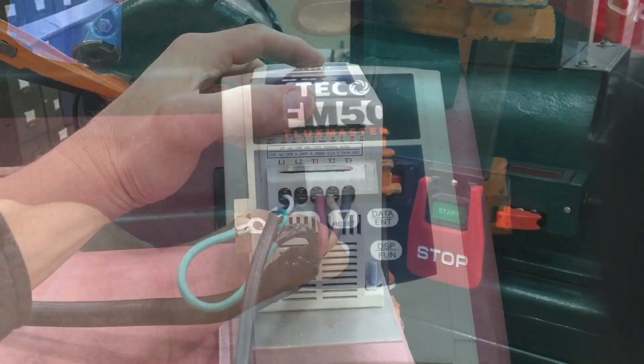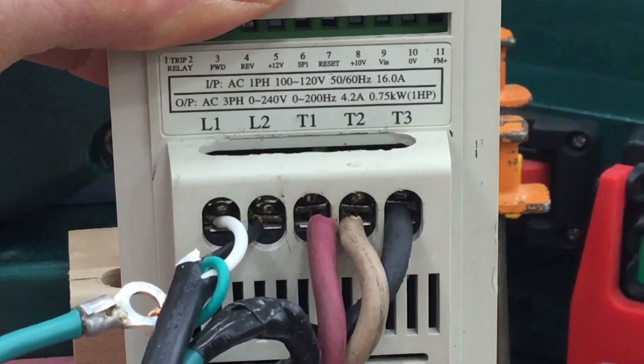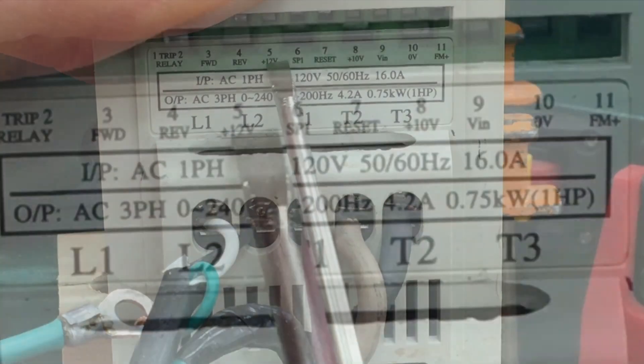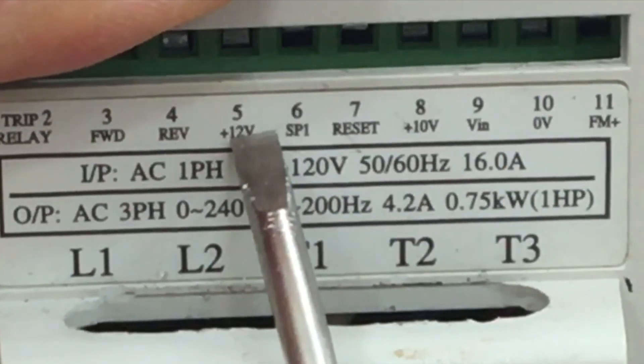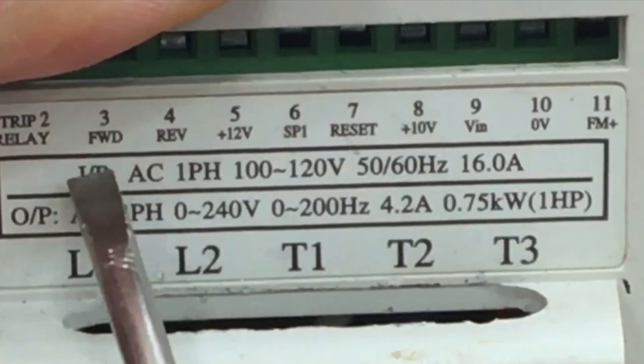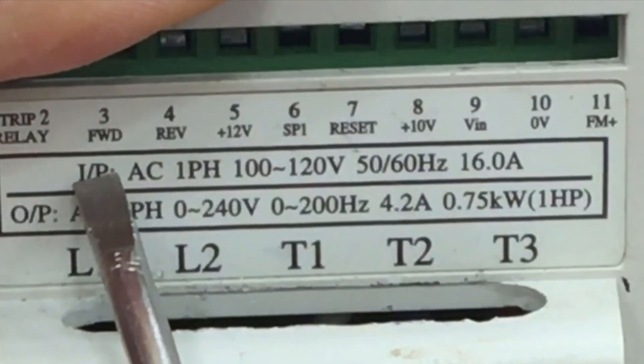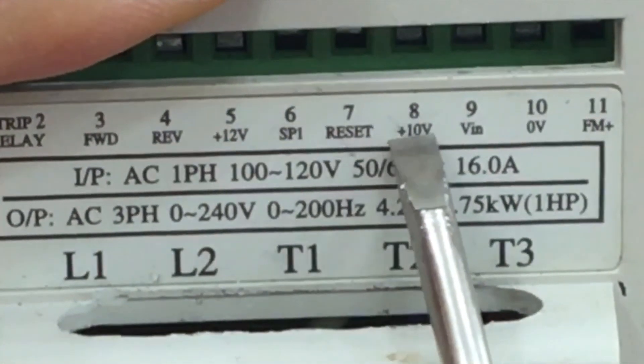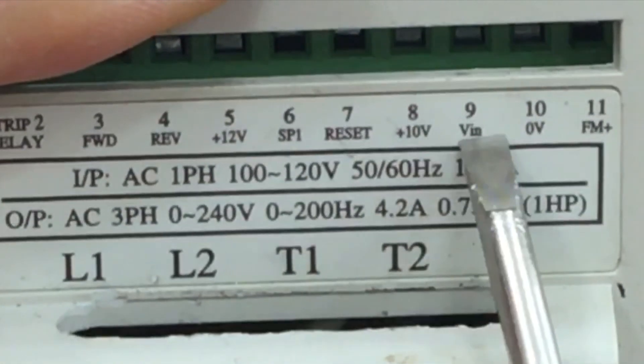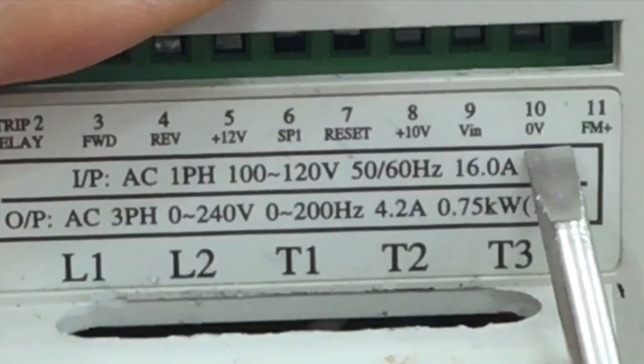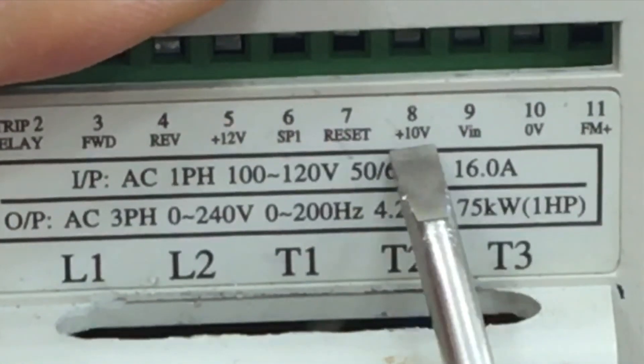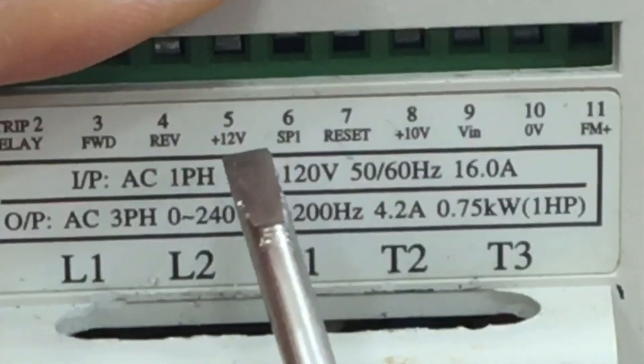So we have moved the control of the VFD from the keypad to this low voltage terminal. And there are 11 different terminal slots and we're only going to use six of them. Forward and reverse direction control is three, four, hooked to number five. And then 8910 is 10 volt, variable volt, and zero volt. That controls the frequency output of the VFD. These three will be attached to a potentiometer.